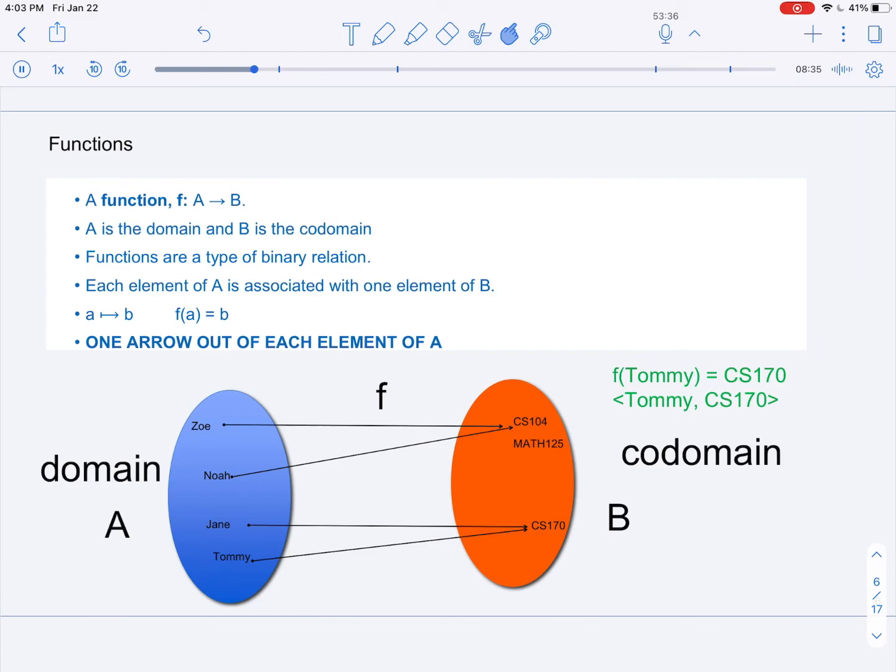Noah is taking 104. Jane and Tommy are both taking 170.